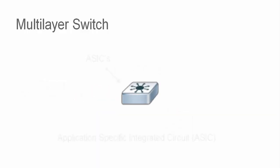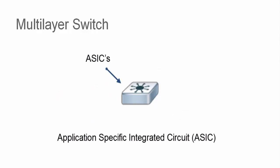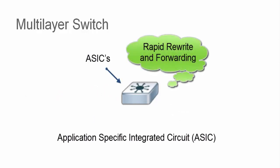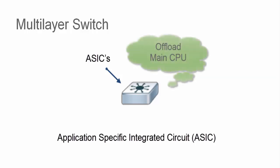The performance of the switch is provided by the hardware ASICs which are responsible for the rapid header rewrites and forwarding. The ASICs which reside at the interface level also substantially offload the main CPU.